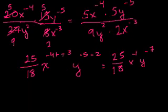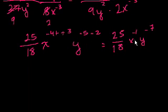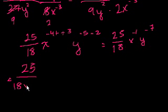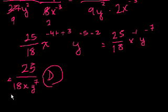And this is the same thing, because this is the same thing as 1 over x to the 1. This is the same thing as 1 over y to the 7th. So this is equal to 25 over 18x, right? 1 over x, y to the 7th. y to the 7th in the denominator, same thing as y to the minus 7 in the numerator. And anyway, that is choice D. And I'm out of time. See you in the next video.